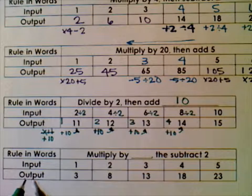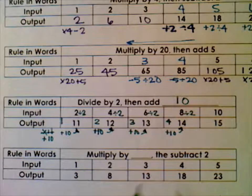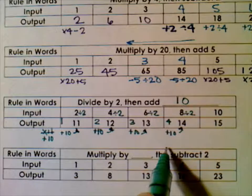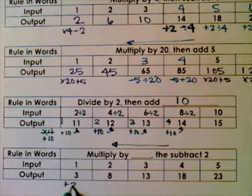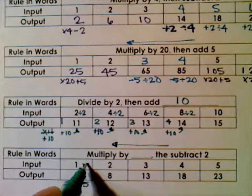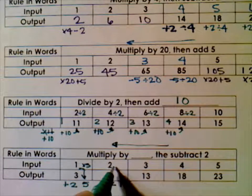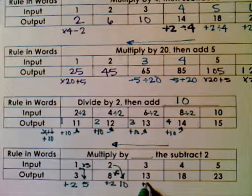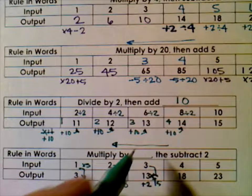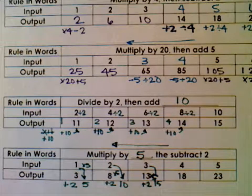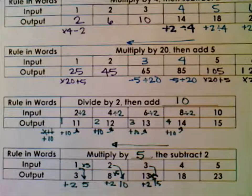The final one: the rule is multiply by something, then subtract 2. Inputs are 1, 2, 3, 4, 5 and outputs are 3, 8, 13, 18, 23. Working backwards: add 2 to output 3 gives 5 — so from input 1 to 5 means multiply by 5. Check: add 2 to 8 gives 10, and 2 times 5 is 10. Add 2 to 13 gives 15, and 3 times 5 is 15. So the rule is multiply by 5, then subtract 2. Those are the first four input/output problems — we'll work on the next four in the next video.